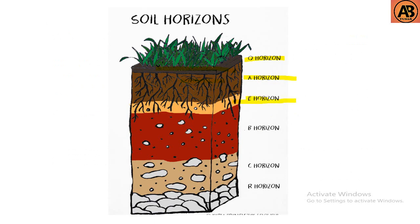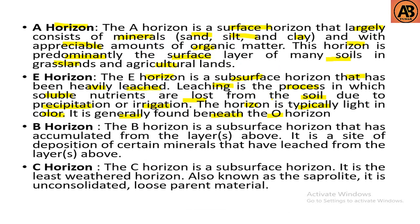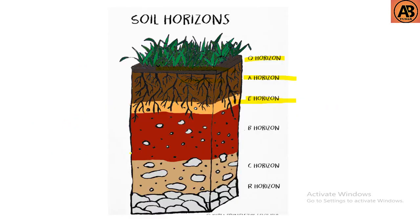The B horizon is a subsurface horizon that has accumulated material from the layers above it. It is a site of deposition of certain minerals that have been leached from the layers above.